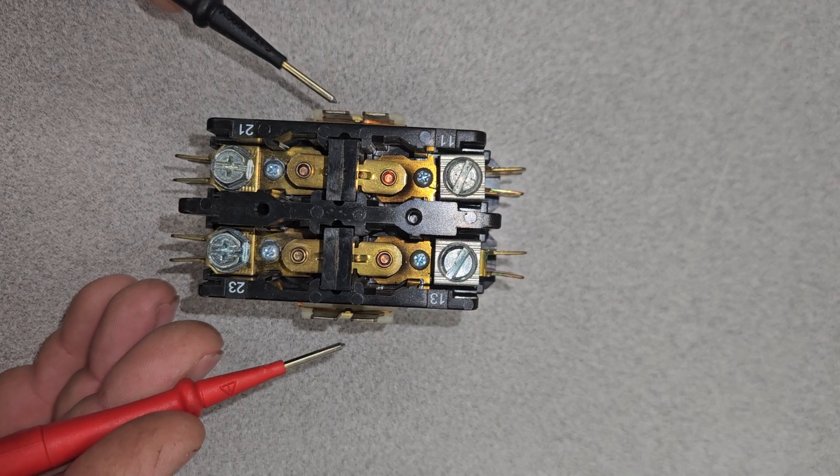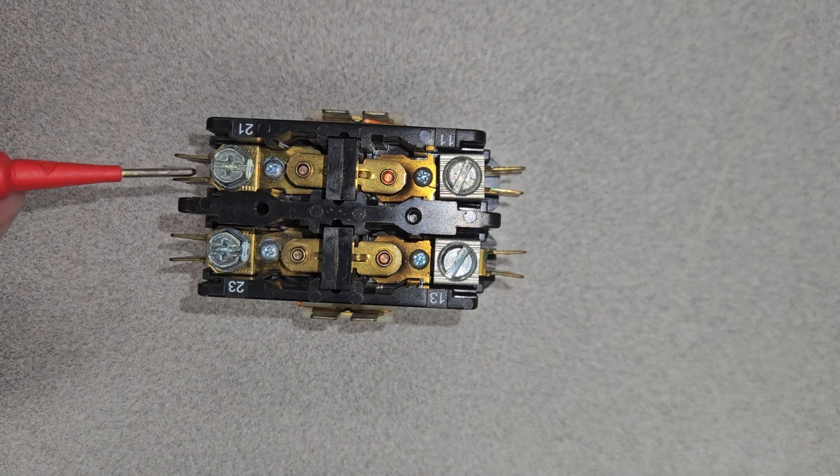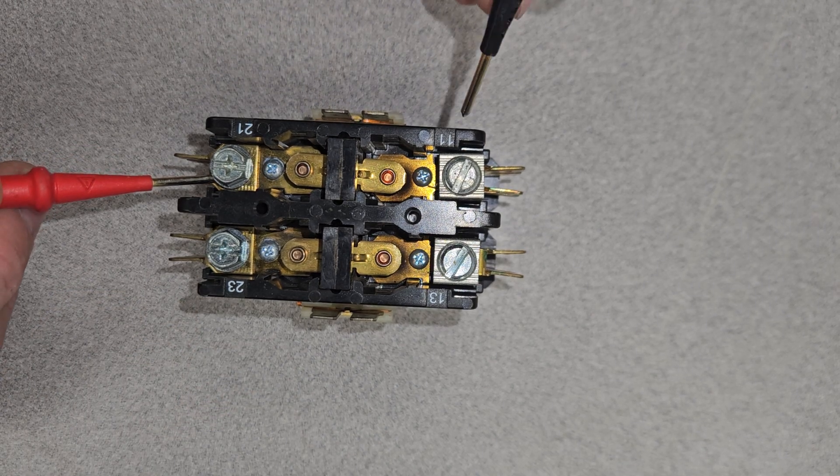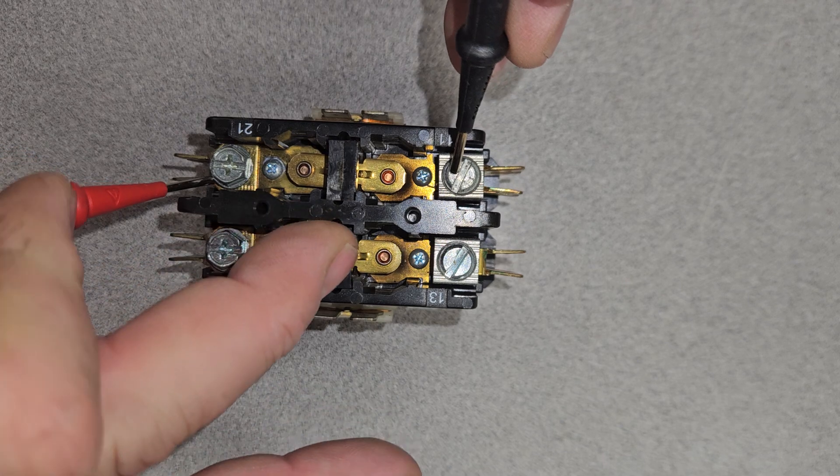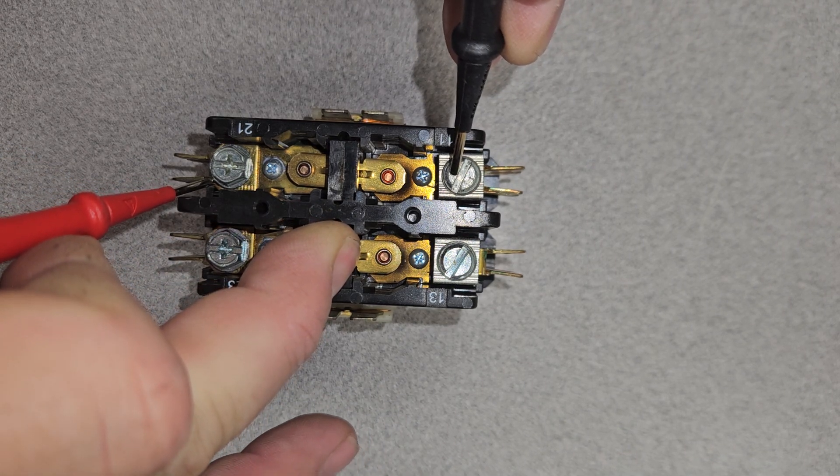Okay, and then we're going to check the coil. Coil is good. That means electrons will flow through it. Then we want to check the actual contacts, and what we'll do is push down on the contactor itself.